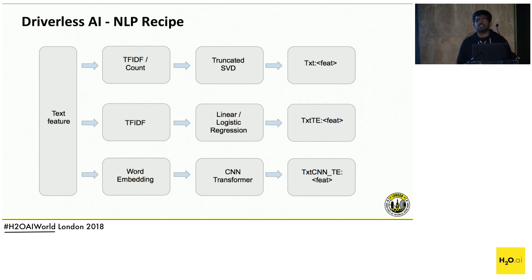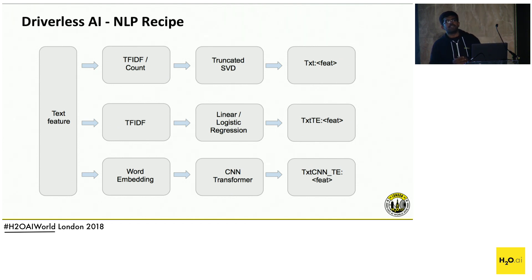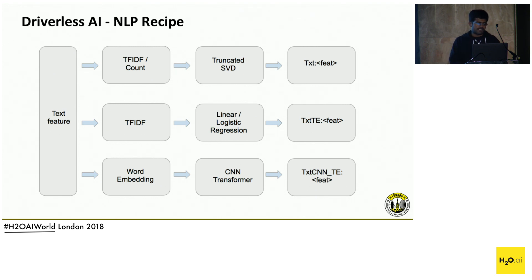The reason we started with CNN instead of RNN models, which are generally used in NLP, is that CNN models tend to be much faster than RNN models. When doing parameter tuning to find the best CNN parameters, it was very fast. We also did experiments and reviewed many papers, finding that CNN is very close to RNN in performance for text classification but significantly faster. We are planning to add RNNs and other new deep learning architectures into our Driverless AI recipe.